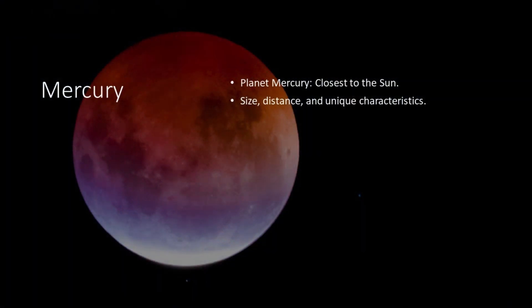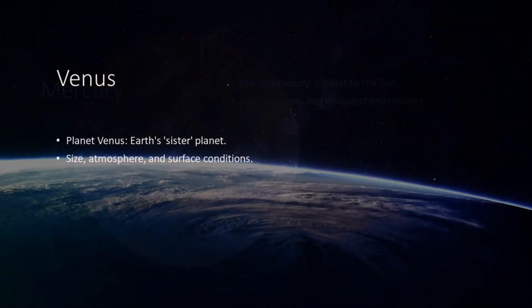Mercury, the smallest and fastest planet, is a testament to the extremes that celestial bodies can endure. Its surface, scarred by impacts and volcanic activity, provides valuable insights into the early history of our solar system. Despite its proximity to the Sun, Mercury is a planet of mysteries, inviting us to delve deeper into the secrets of its formation and geology.